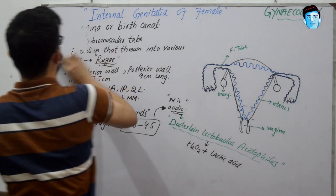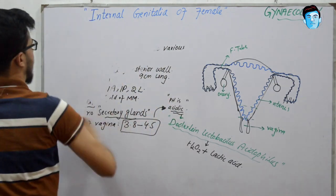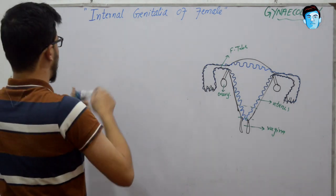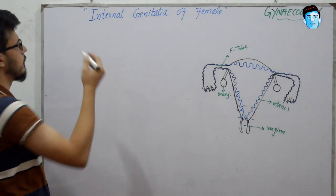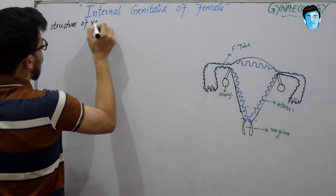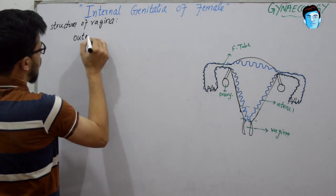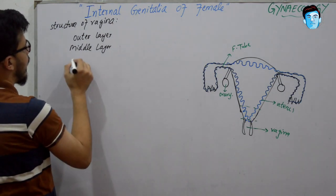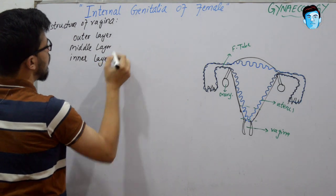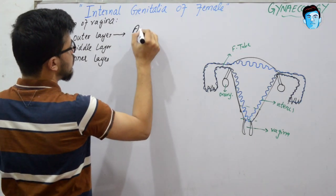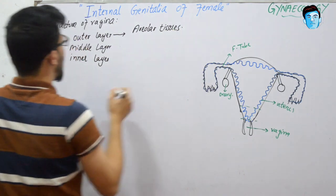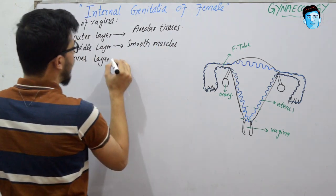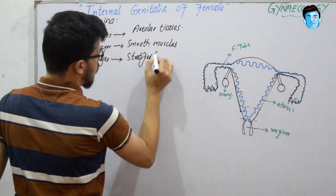Now let's look at the structure of the vagina. The vagina consists of three layers: an outer layer, a middle layer, and an inner layer. The outer layer consists of areolar tissue. The middle layer consists of smooth muscles. The inner layer consists of stratified squamous epithelium.